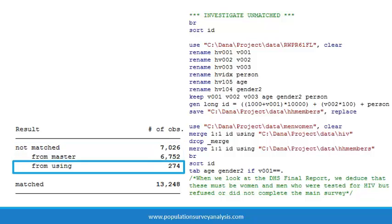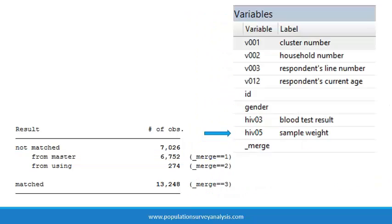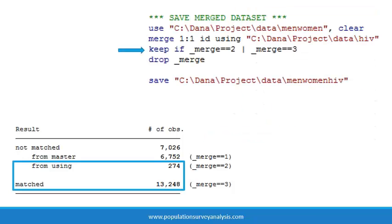Ultimately, I determined that the 274 people tested for HIV with no matching survey data refused or had incomplete responses. The 6,752 people who responded to the main survey but did not get tested for HIV were expected per the sample design, because only every other household was selected for HIV testing. Since our research question is about HIV and we have a sampling weight for everyone tested for HIV — the HIV sampling weight is HIV-05 — we decide to keep the 13,248 matching records, plus the 274 HIV test results that did not have a matching observation in the main women's or men's surveys. Ultimately, these 274 records will fall out of the analysis due to missing data.